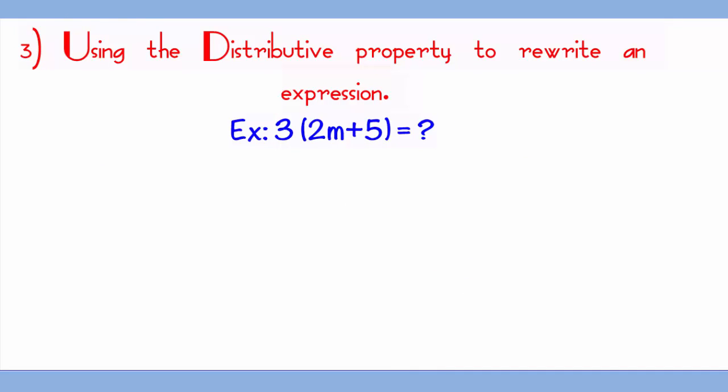Now, how do you use the distributive property to rewrite an expression such as 3 times 2m plus 5? The first thing you should know is that 3 times (2m plus 5) basically means 3 groups of 2m plus 5. Given that you have 3 groups of that, you can write 2m plus 5 three times.